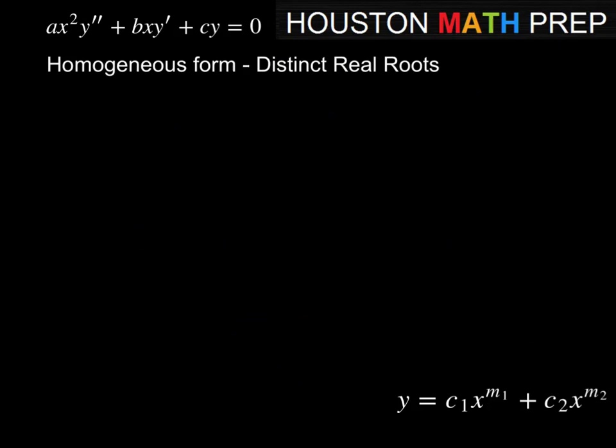First type: when we solve the auxiliary equation and get distinct real roots, then our solution is going to be in this form, y equals some constant times x to the m1 plus some constant times x to the m2, where m1 and m2 are the solutions to our auxiliary equation.